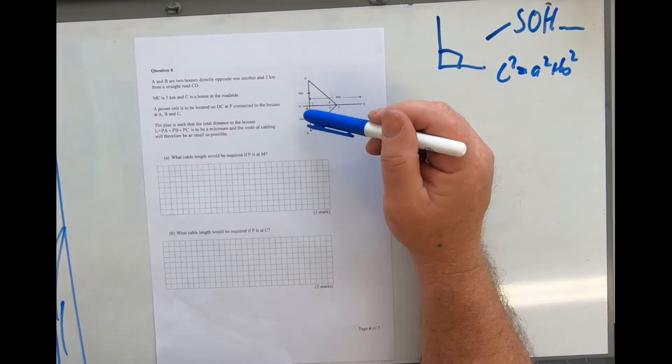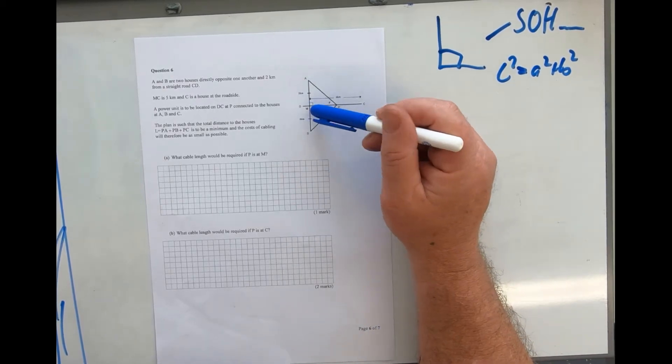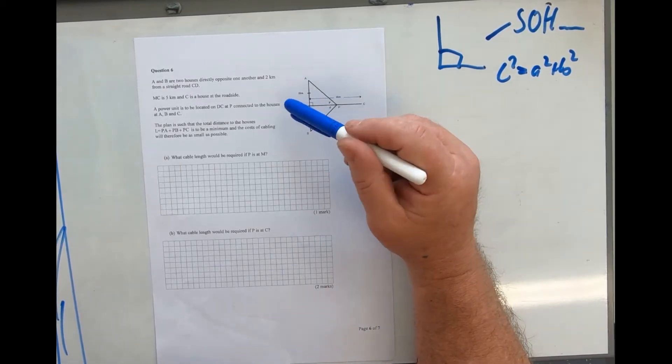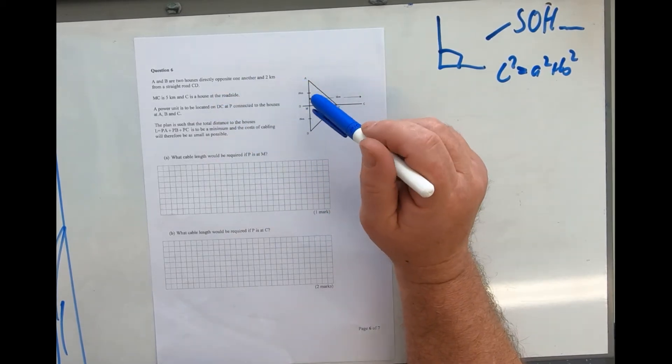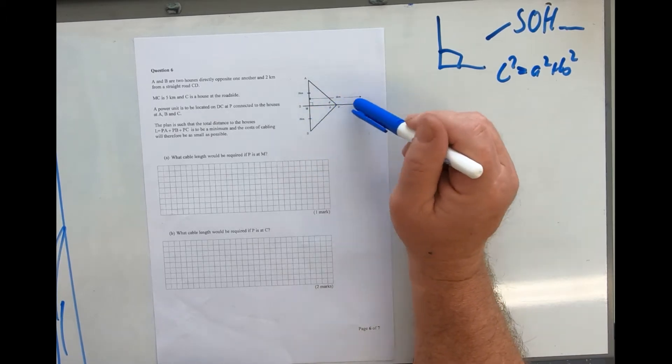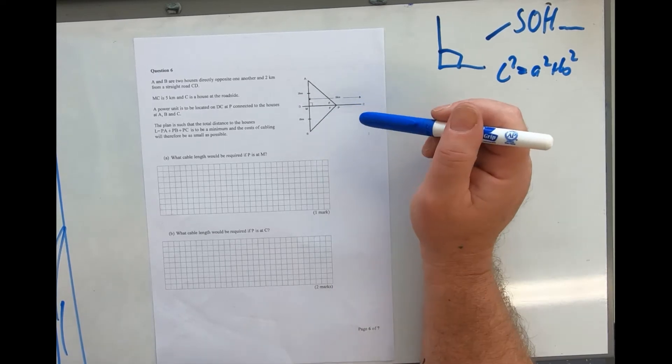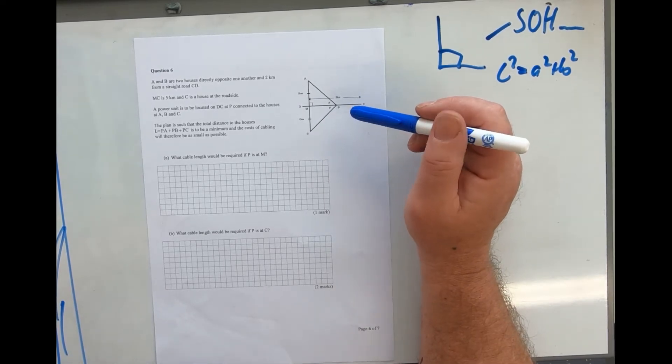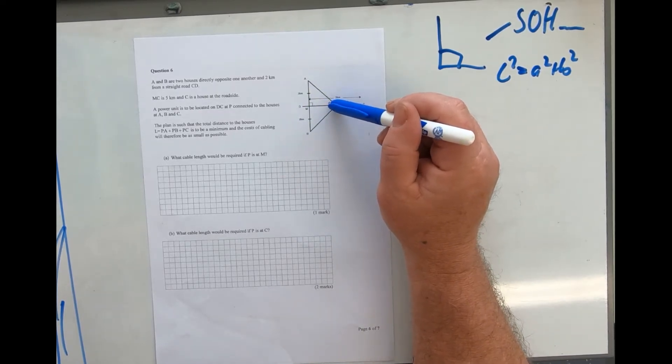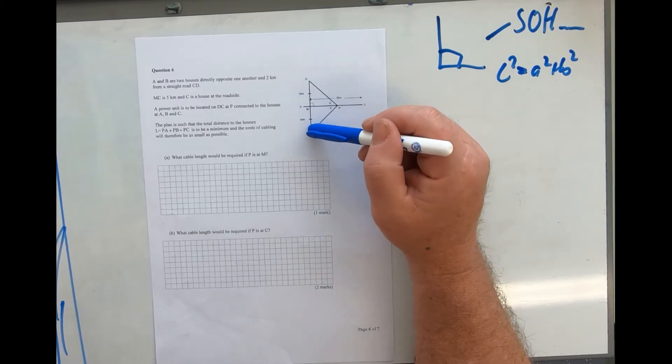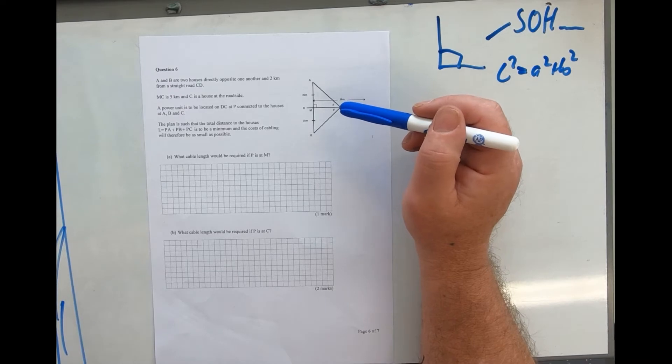Houses A and B are opposite one another, both 2k from a straight road. M is 5k, MC. C is a house. There's a power unit at DC on this line at P. The power unit is connected to three houses, and the plan is to minimize that distance.